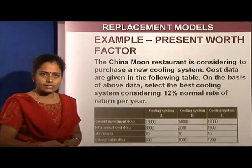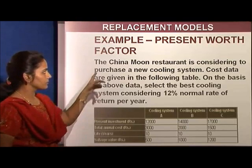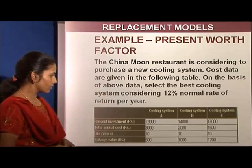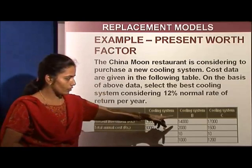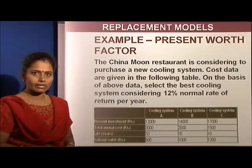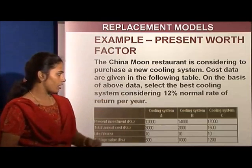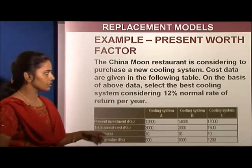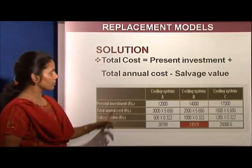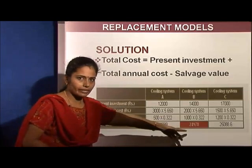Another model involves the present worth factor — what is the net present value of a machine? Here, a restaurant is evaluating three cooling systems: A costs 12,000, B costs 14,000, and C costs 17,000 as the present investment. The total annual cost and lifetime (10 years) are given for each, along with the salvage value. At a 12% normal rate of return, the total cost is calculated as: present investment + annual cost − salvage value. Comparing all three, cooling system B gives the minimum total cost and is therefore the optimum decision.